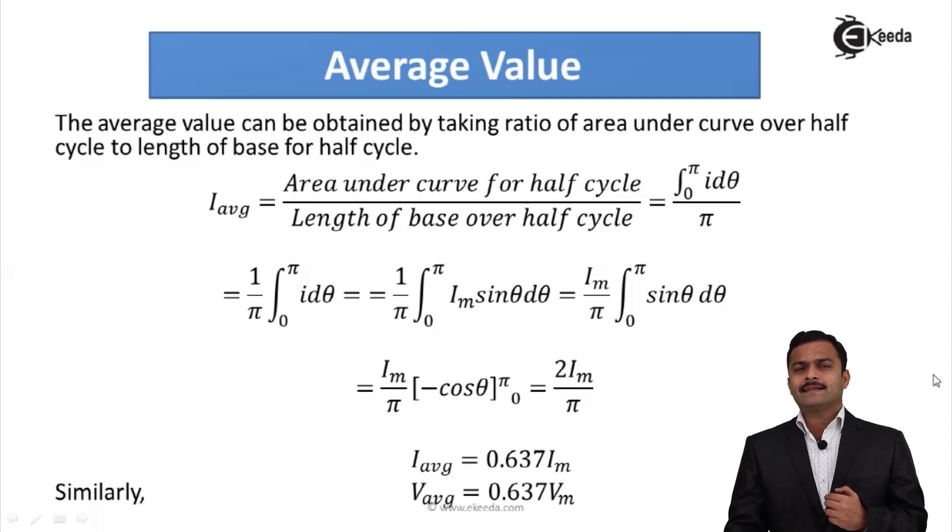So average value is nothing but whenever I convert AC into DC and without any filtration if I check the voltage, that voltage is nothing but average value. Thank you.